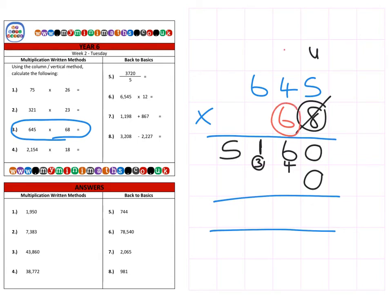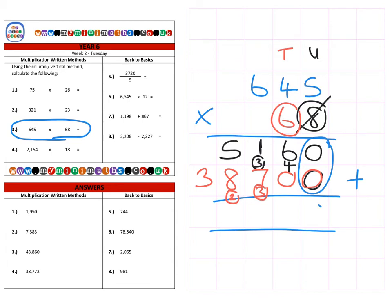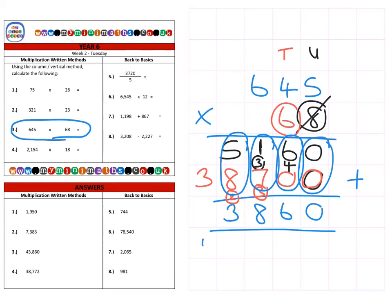Then we look at the tens — we already have our magic zero here. Six fives are thirty. Six fours are twenty-four, plus the three is twenty-seven. Six sixes are thirty-six, plus the two is thirty-eight. Then we add them together: zero units, six tens, one hundred and seven hundred is eight hundred, five thousand and eight thousand is thirteen thousand — carrying over into the ten thousands column — and thirty thousand and ten thousand making forty thousand. Final answer: forty-three thousand eight hundred and sixty.